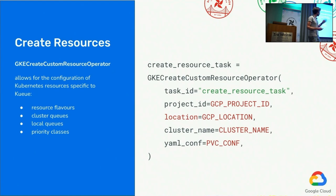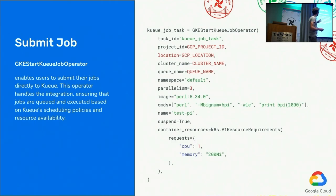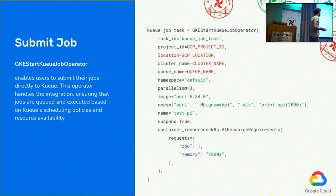The GKE create custom resource operator is used to create all Kueue-specific resources: the resource flavors needed to define different classes of resources in your cluster, cluster queues and local queues which are abstractions of the queues that you submit jobs to, and the priority classes if you need to set different priorities for jobs. And the GKE start Kueue job operator, which inherits from the GKE start job operator, enables you to submit the job directly to the Kueue, letting the Kueue handle all the magic running in the cluster.